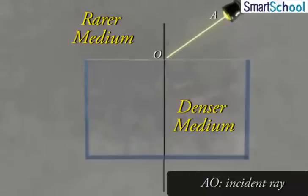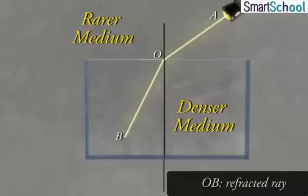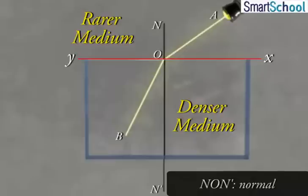A-O is called incident ray. OB is refracted ray. N-O-N-dash is called normal to the plane surface X-Y separating the two media.